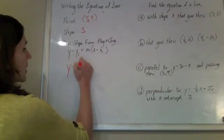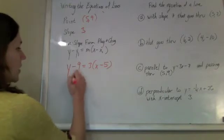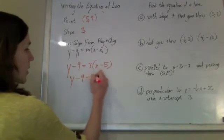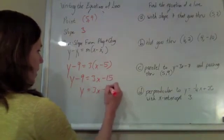y minus y1 equals m times x minus x1. And then we just solve this. y minus 9 equals 3 times x minus 15. y equals 3x minus 6.